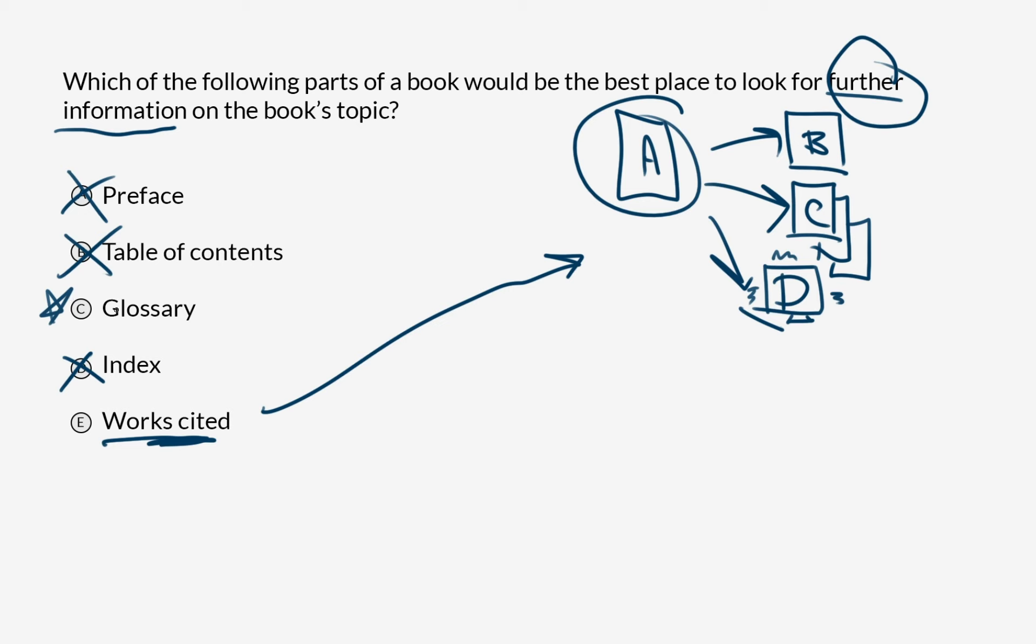So Glossary was tempting but I'm going to cross it off because Works Cited is where we would want to go. You know, if I read book A and it was about salamanders, but I wanted to learn about other kinds of amphibians, I would look in the works cited and I would see, well, what other things has this author read about? What do they recommend? And I would go on to read source B about frogs and source C about newts. Because I'm looking for further information on the book's topic. I'm not looking for something that's already inside the book.